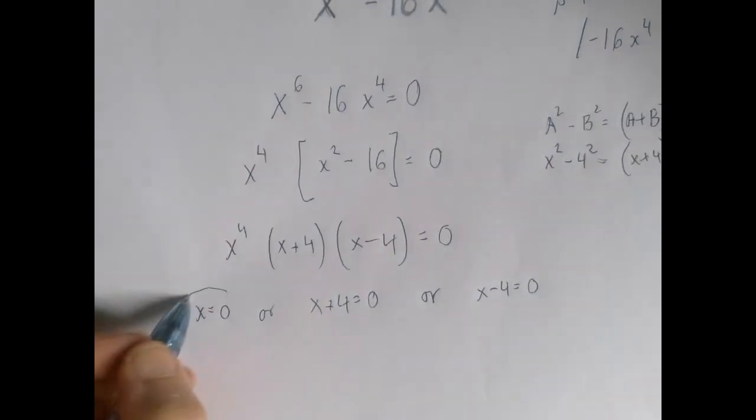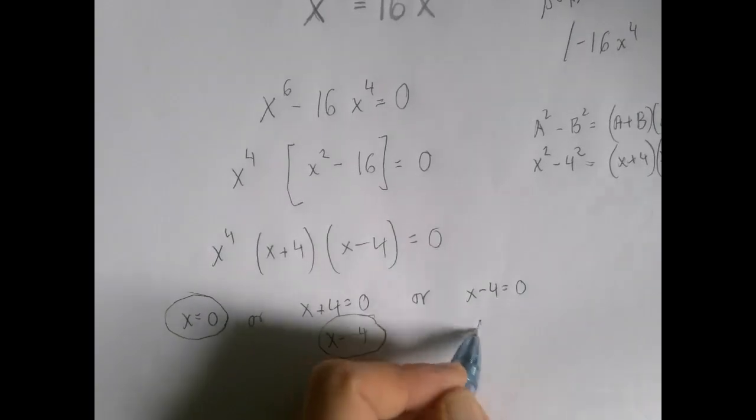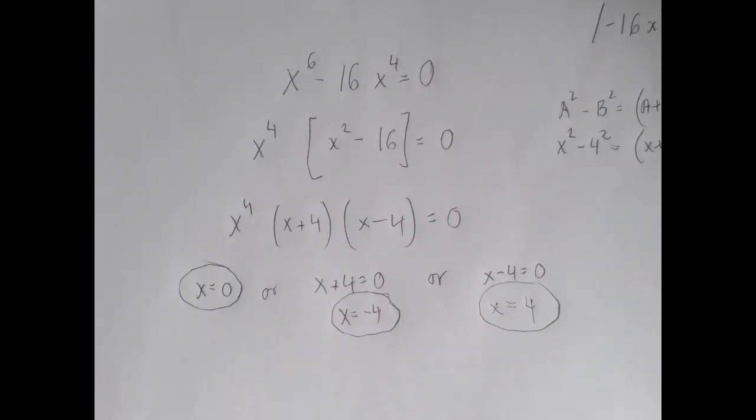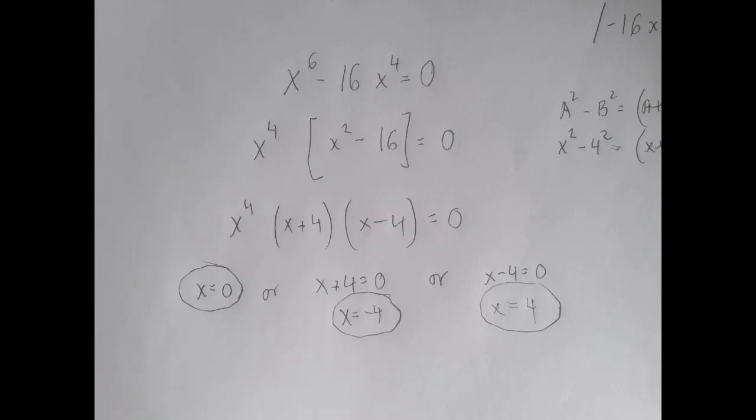And then we solve for x, which translated one big equation into a bunch of smaller linear ones. So this equation has three solutions: zero, four, and negative four.